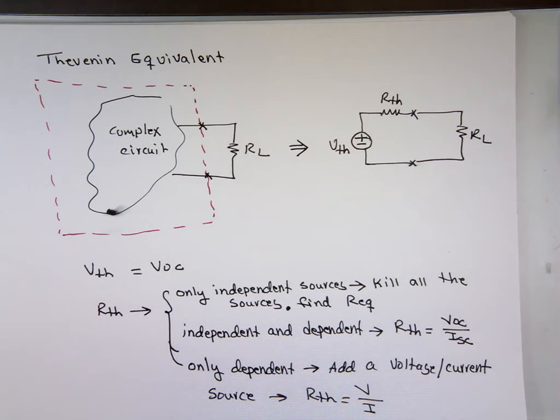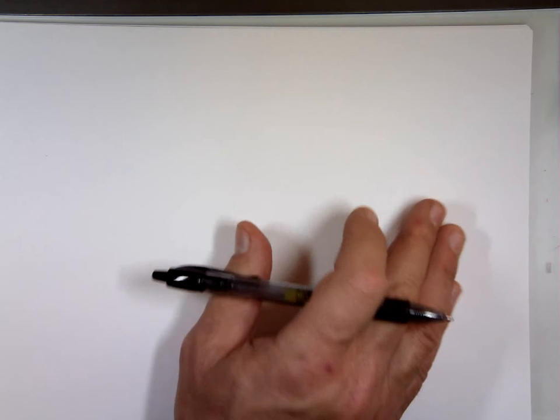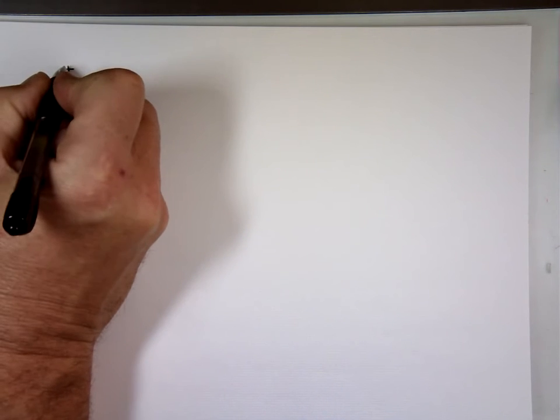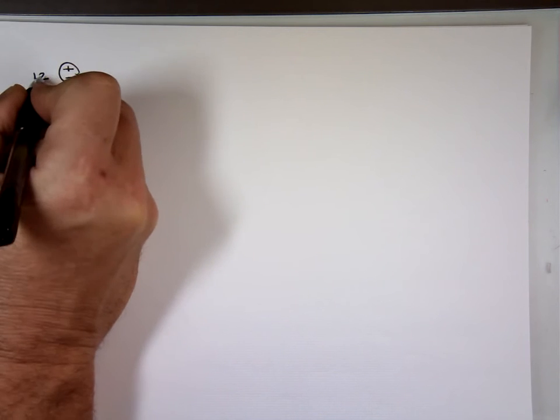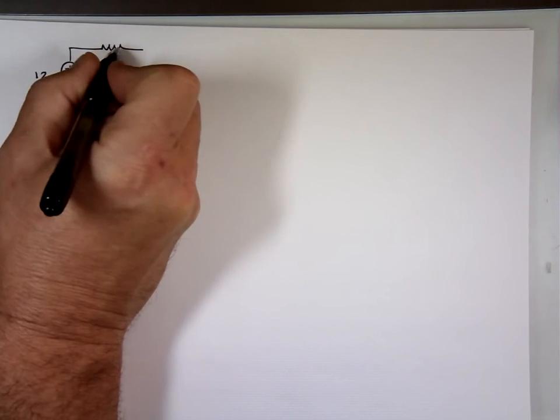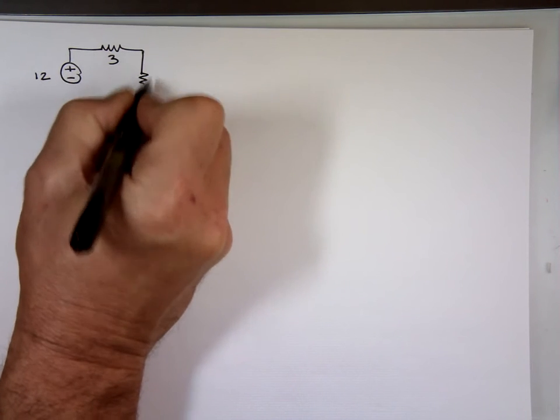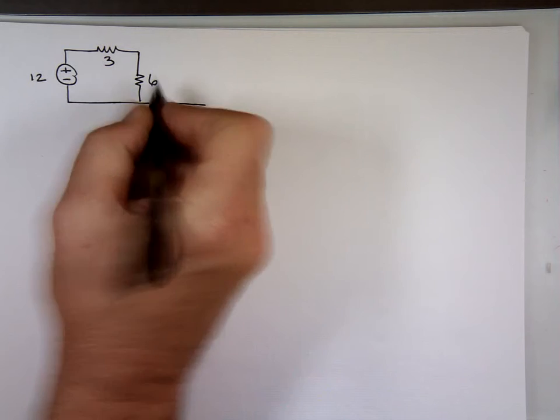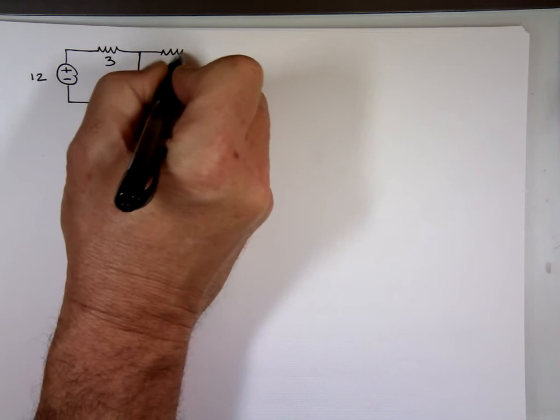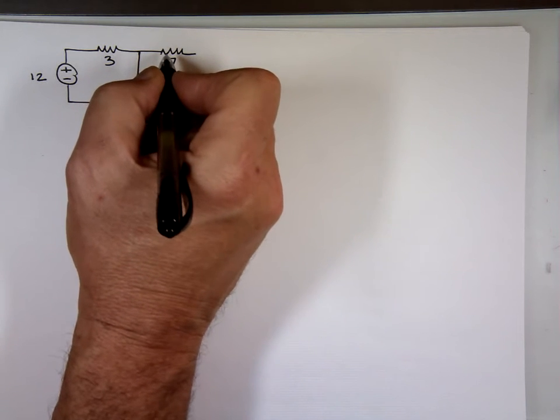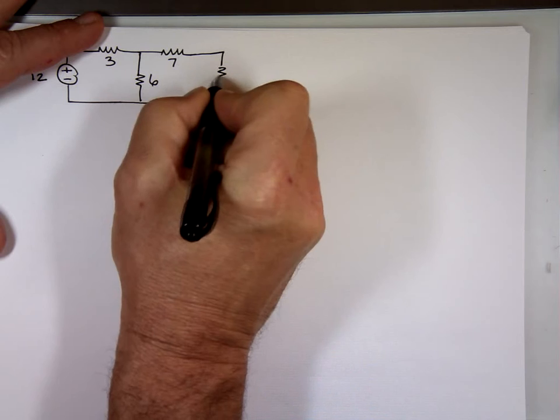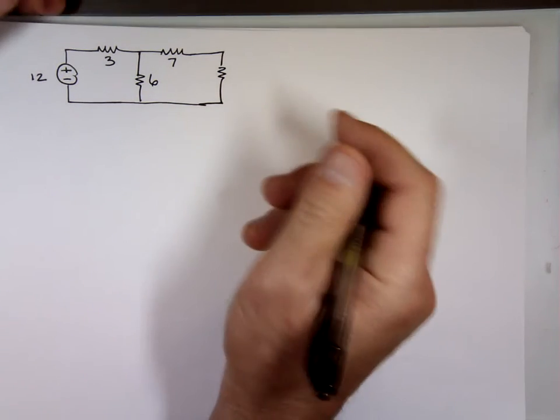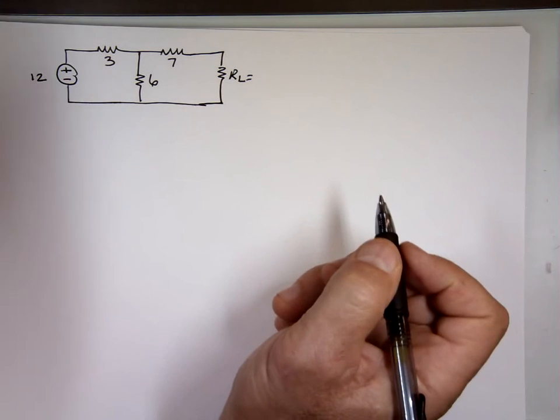So let's take an example. Here's an example. We'll do the first one with only independent sources. So we have a voltage source of 12 volts. We have 3 ohms here. I think the top is 7 ohms and R sub L. This is the load. Somebody pick a number for R sub L. Like a reasonable number like these numbers here. 9? Okay.